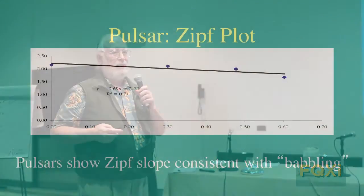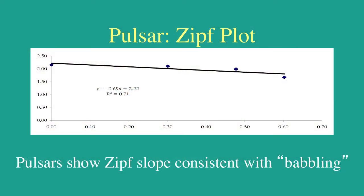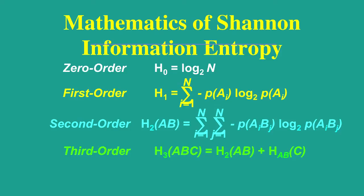If you want to see a pulsar — just in case you don't trust Zipf's slope to distinguish between astrophysics and intelligent communication — that produces a very flat slope. We can also go ahead and use higher-order entropies, since Zipf's law only captures the components of the first-order Shannon entropy.